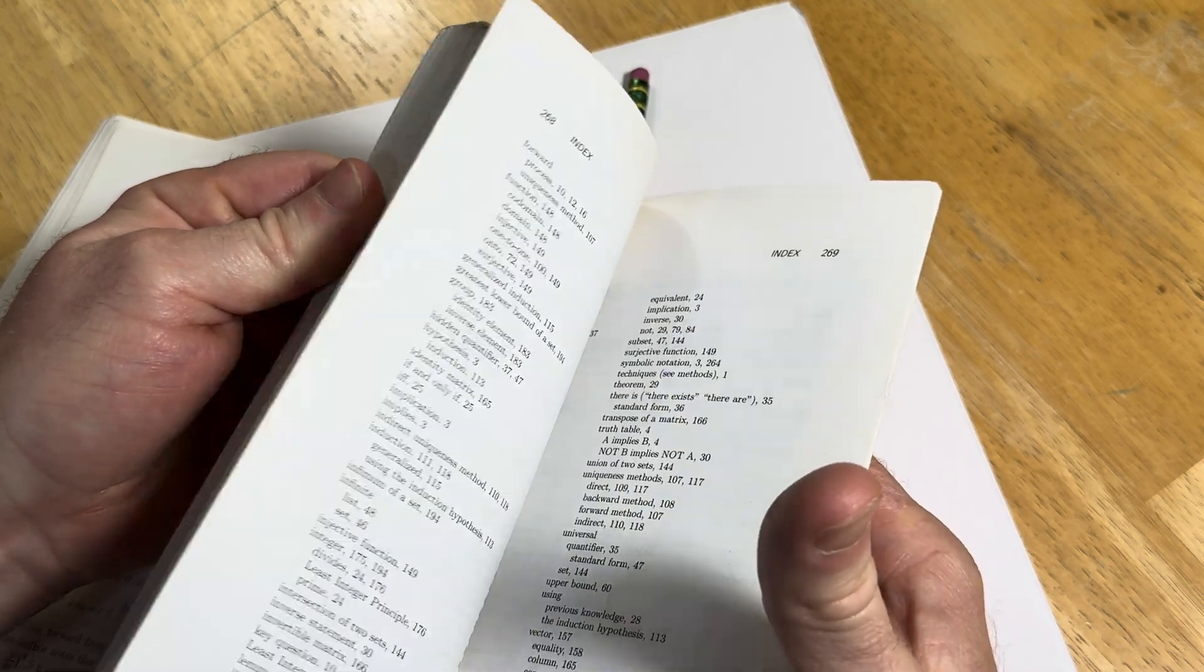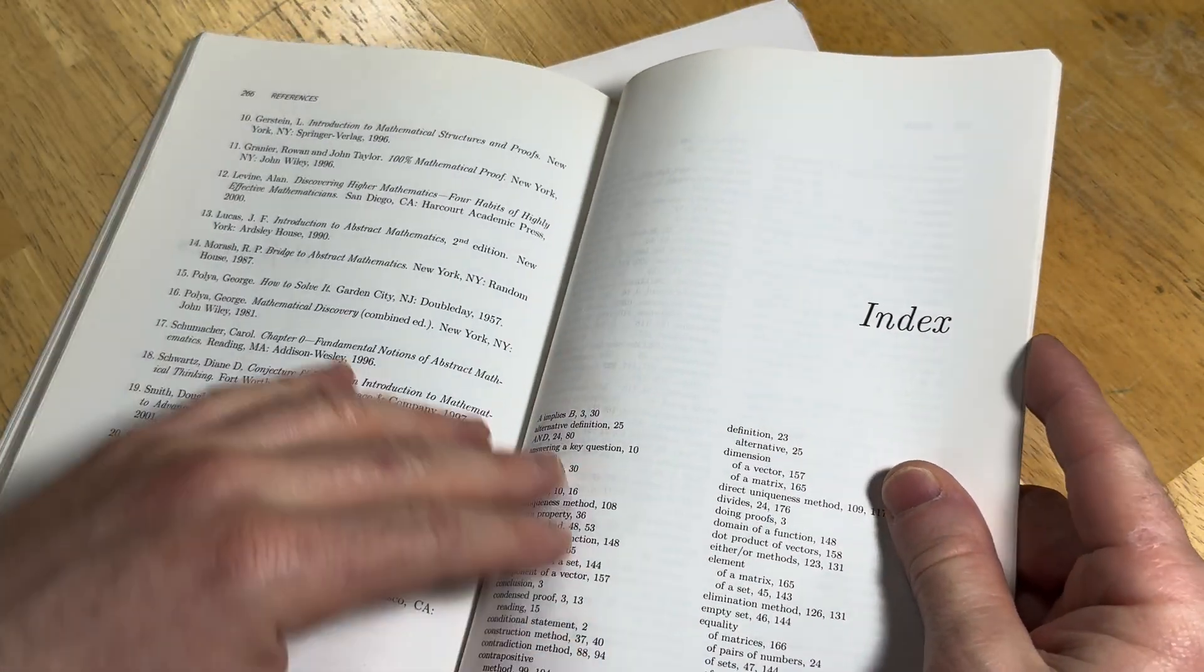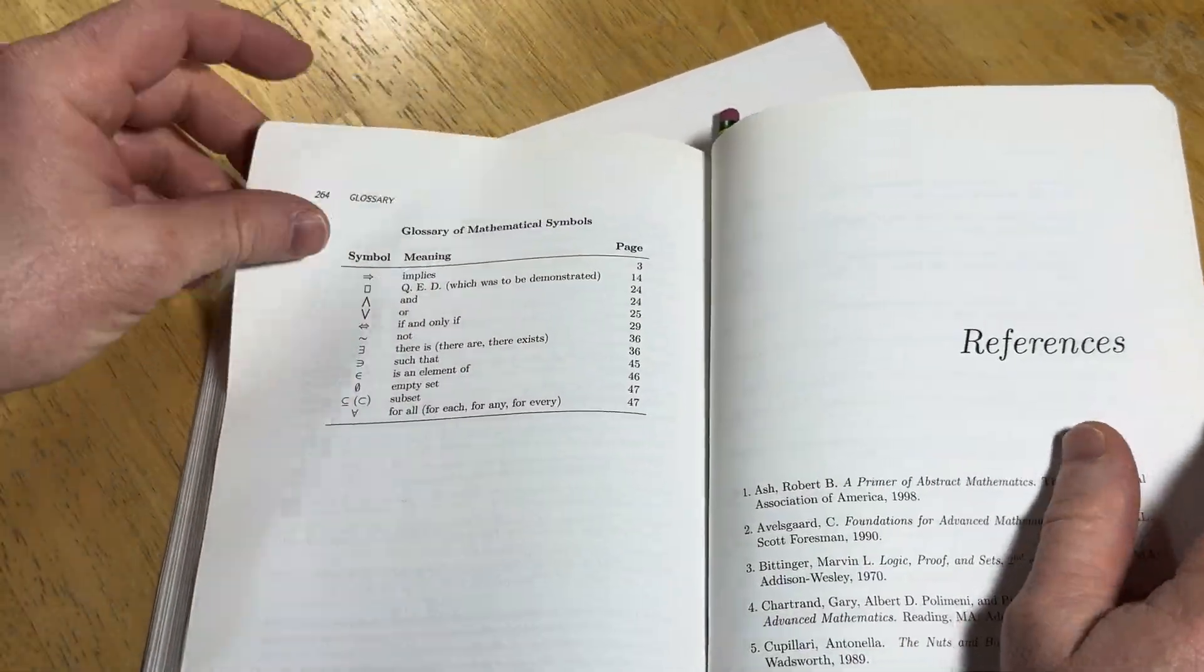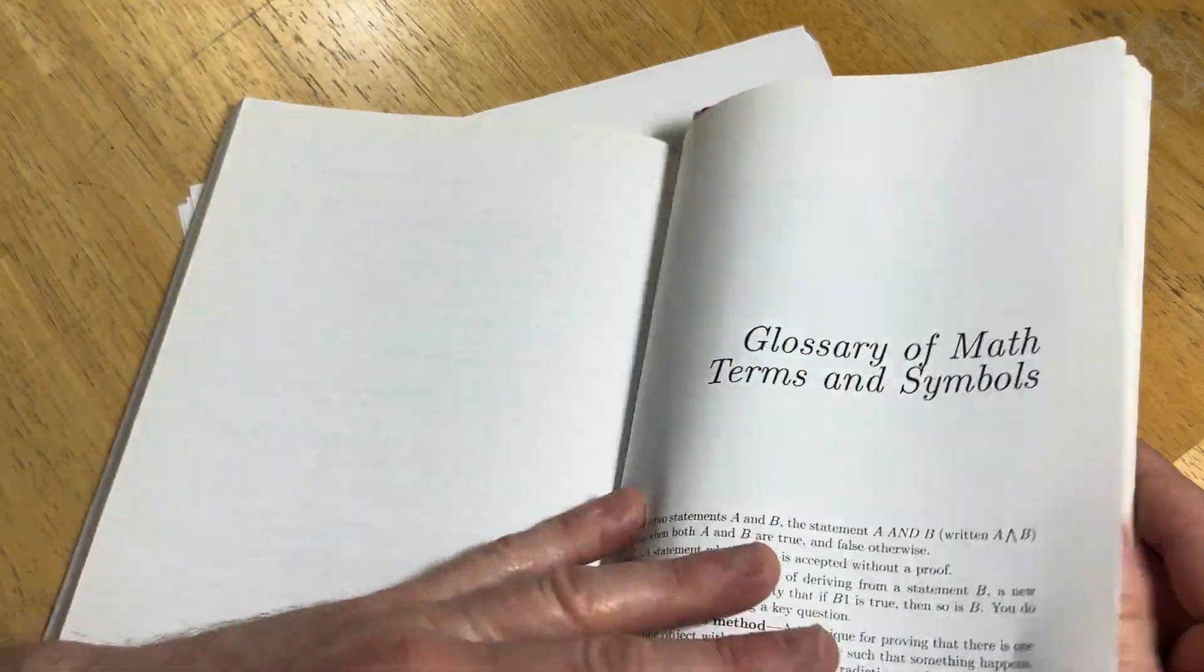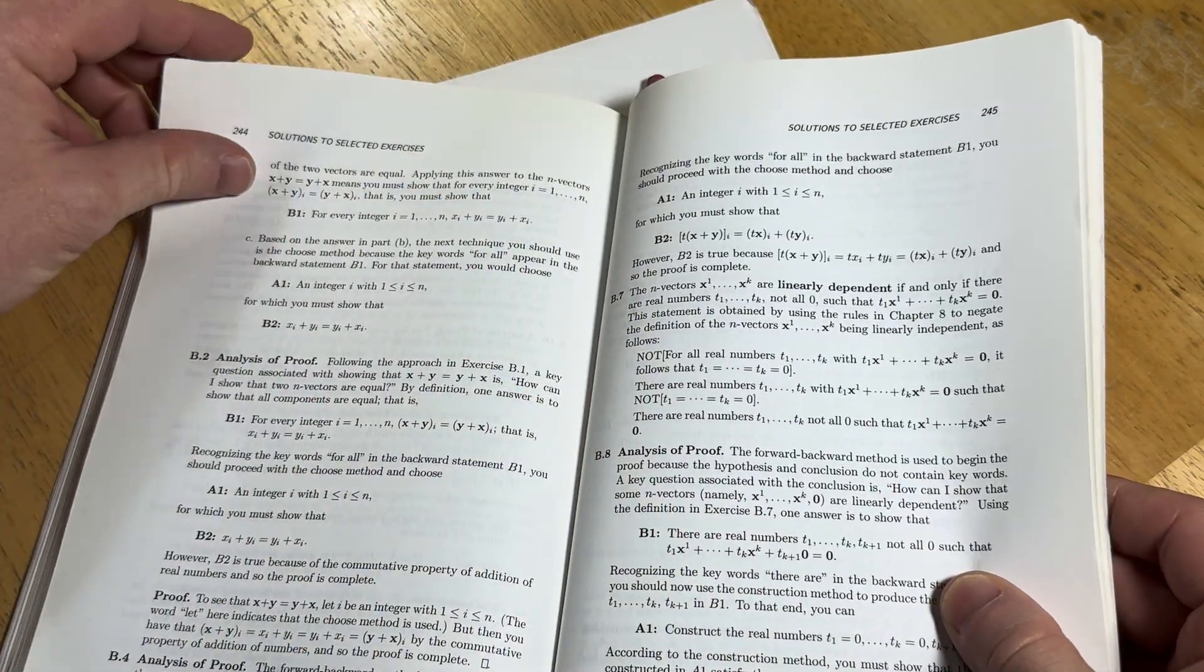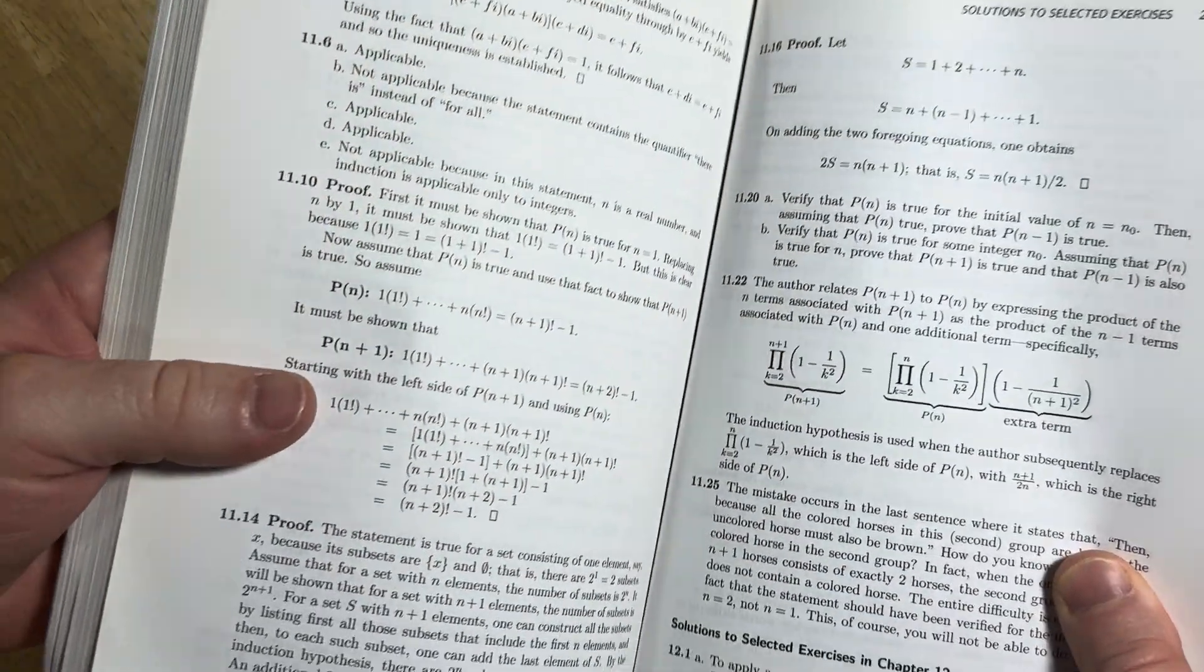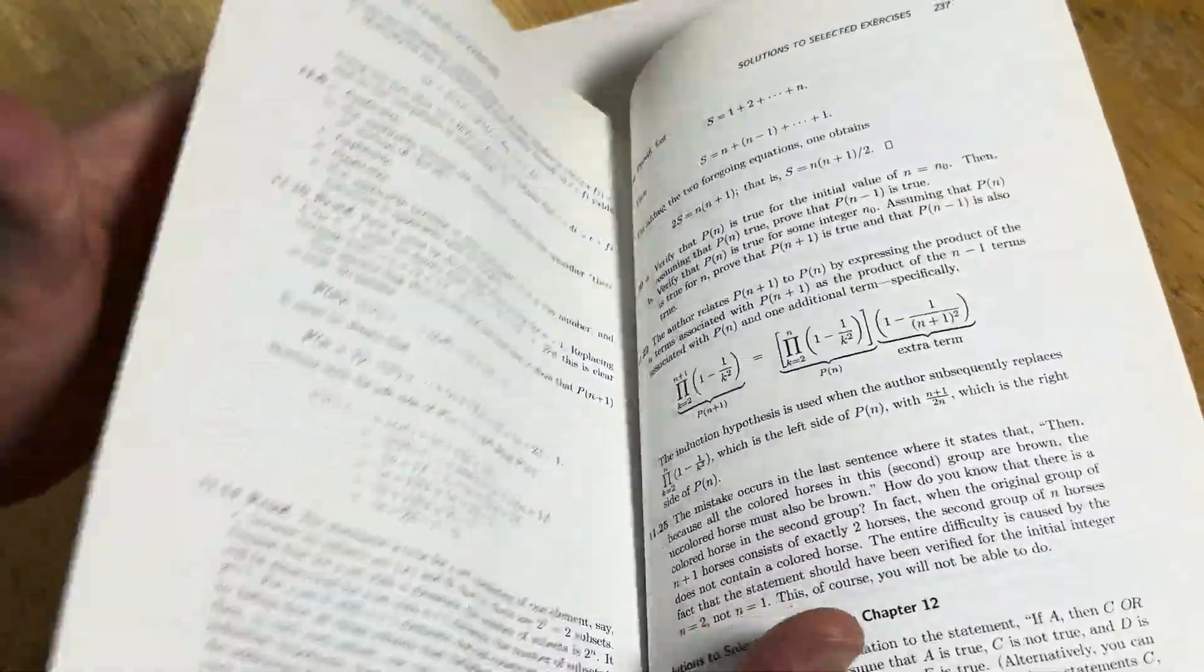And let's look at the answers in the back so you can see. It's got some references, by the way, and it has an index, and there's a glossary here of mathematical symbols, and here's a glossary, which is very good. The glossary of math terms and symbols is very good. And here you can see some solutions to selected exercises. And you do get full solutions to some of the exercises, not all.